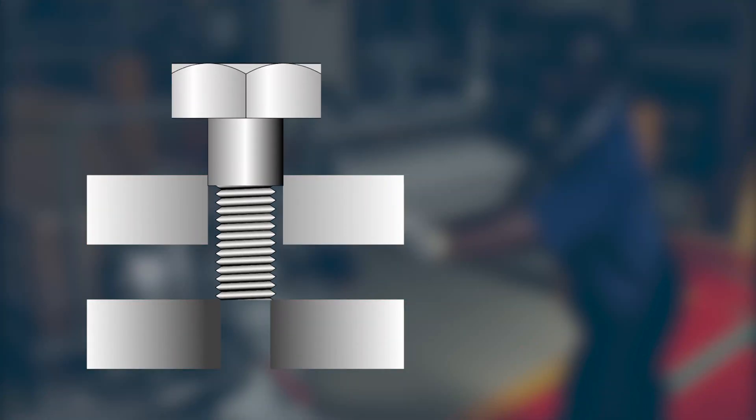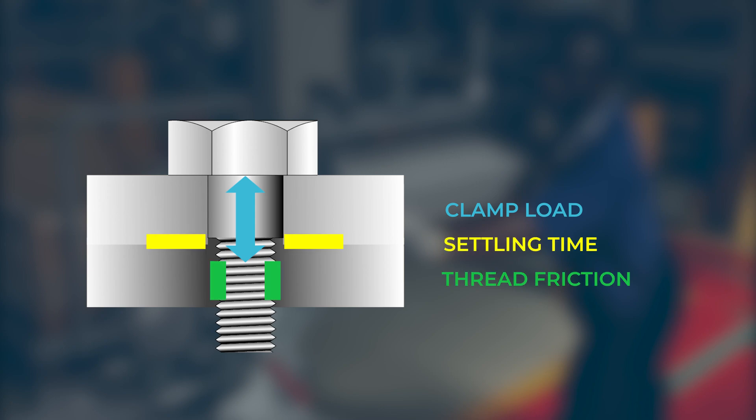Diving into bolting, the ultimate goal of a bolt is to achieve a consistent and accurate clamp load between two components. There are a number of influences that impact the clamp load, such as thread friction, settling time, as well as underhead friction.